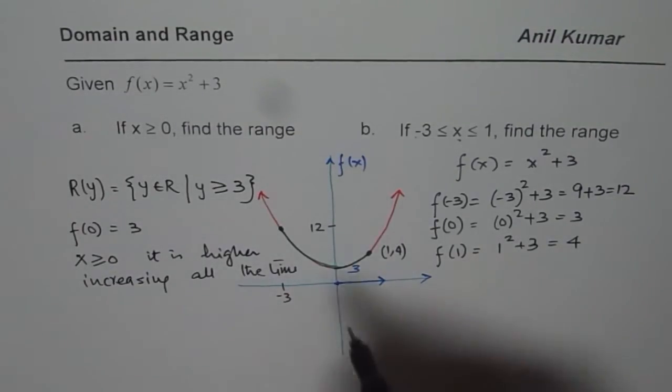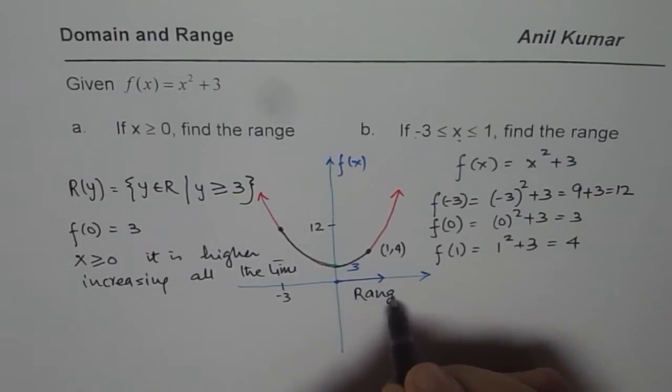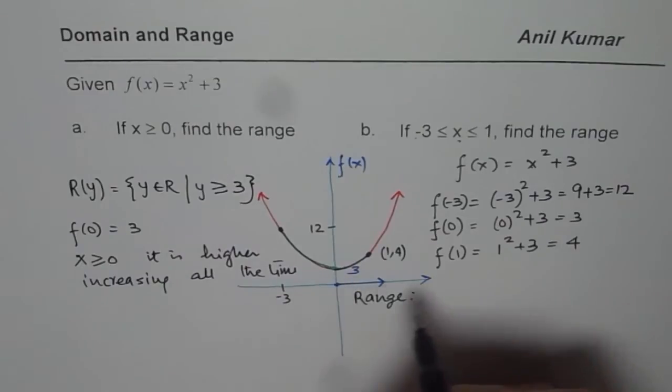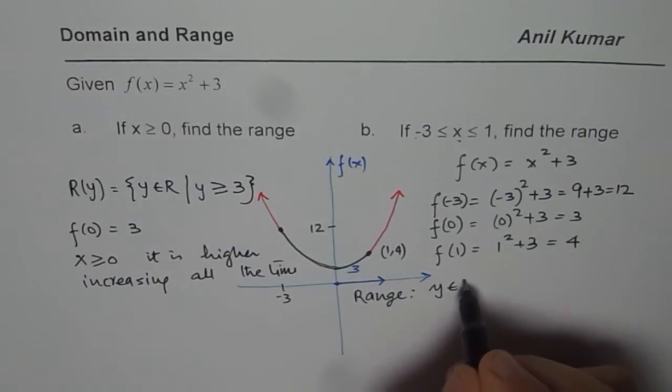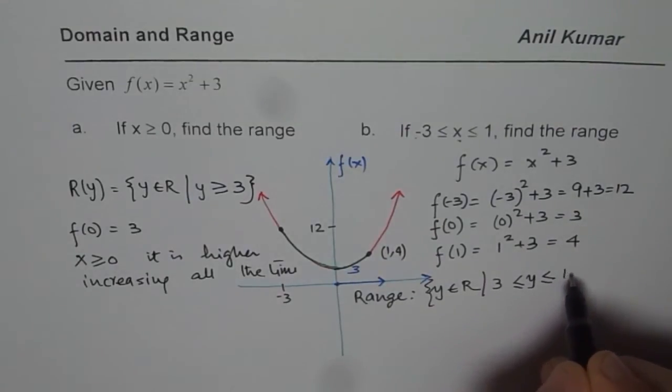Now from here, we can say the range is what? So from here, we can say range of this function in that duration is minimum value is 3. So we say y belongs to real numbers, where y is greater than or equal to 3, but it is less than or equal to 12.